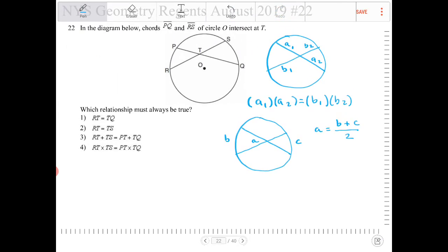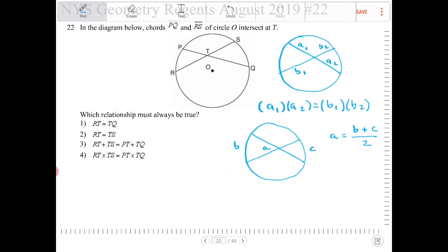And this is always going to be true no matter what happens with the circle, whether the chords intersect the center of the circle or not, or it was on one side of the center of the circle or the other. Anyway, let's take a look at the answer choices. Which relationship must always be true?